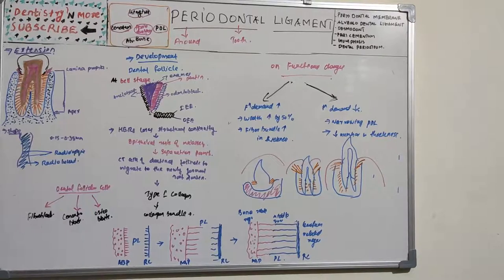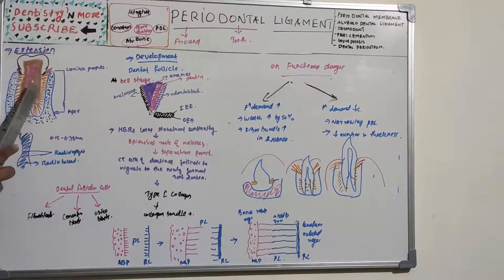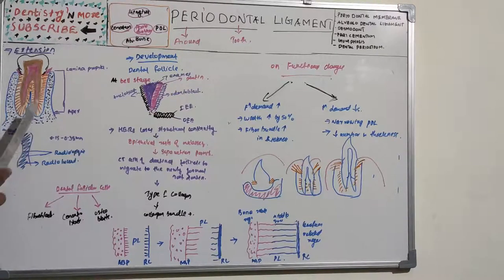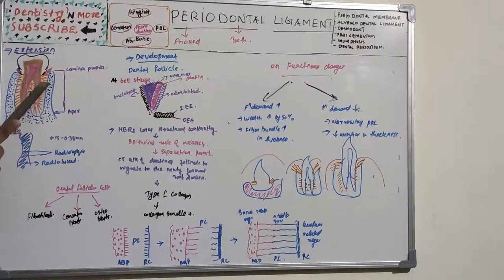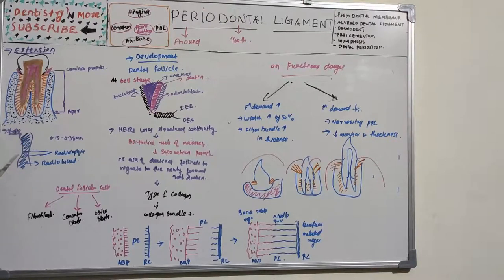The shape of the periodontal ligament is thinnest around the middle third of the root, giving it an hourglass appearance. It is broader at the coronal and apical thirds but thinnest at the middle third. The coronal third, middle third, and apical third can be clearly identified, and the hourglass shape reflects the widening at both ends.